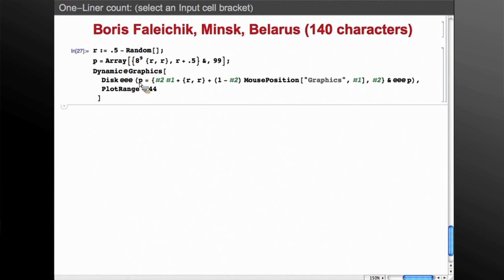The meat of this example is here in this expression. Let's take a closer look at that. So P is this list of centers and radii, and every time this expression is evaluated, it reassigns the value of P by applying this function to every element of P. So P is a recursive function that derives a new value of P from the old value of P.